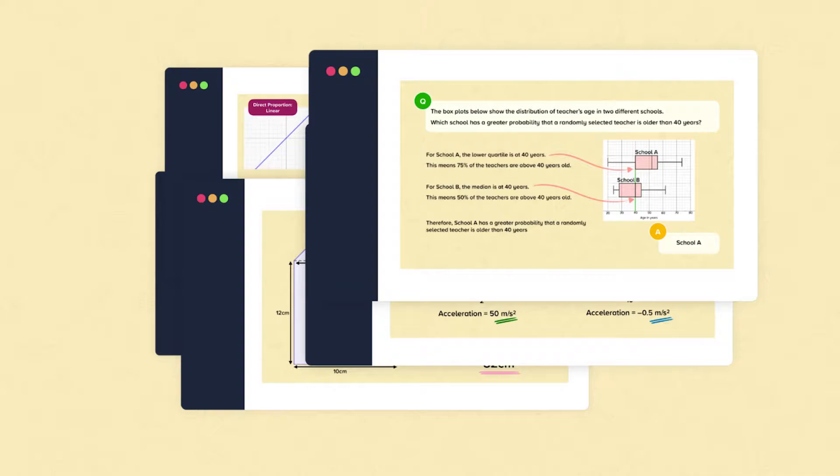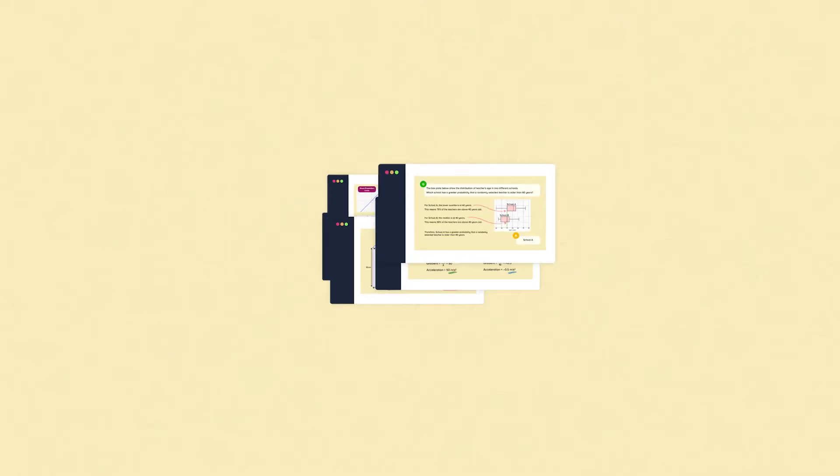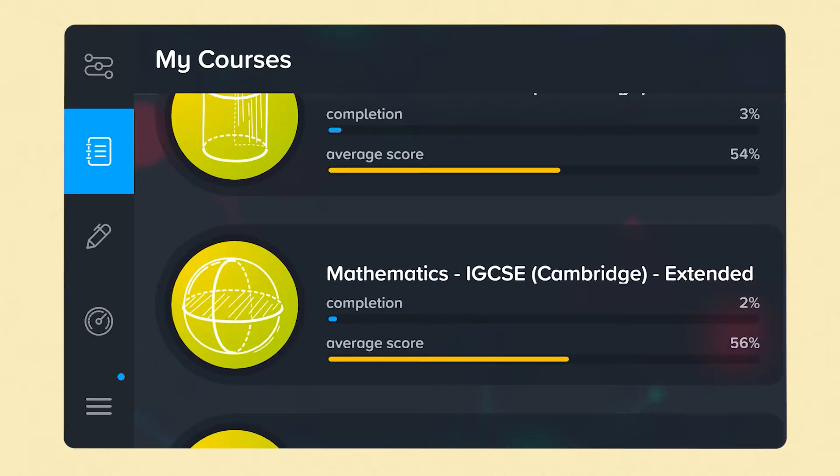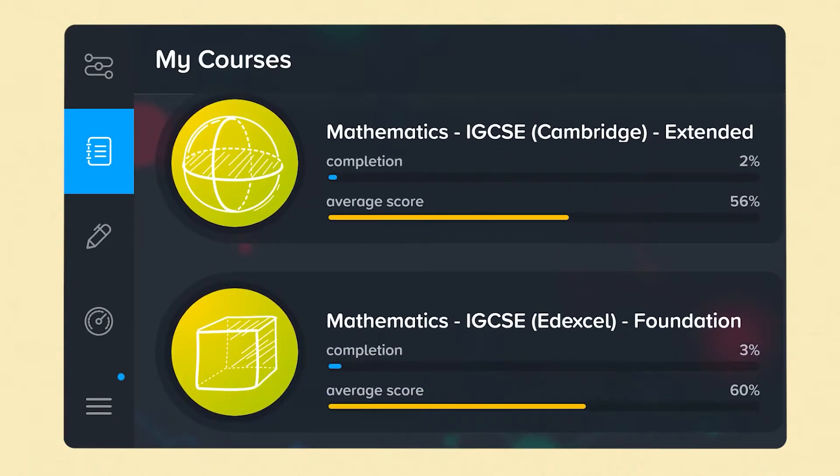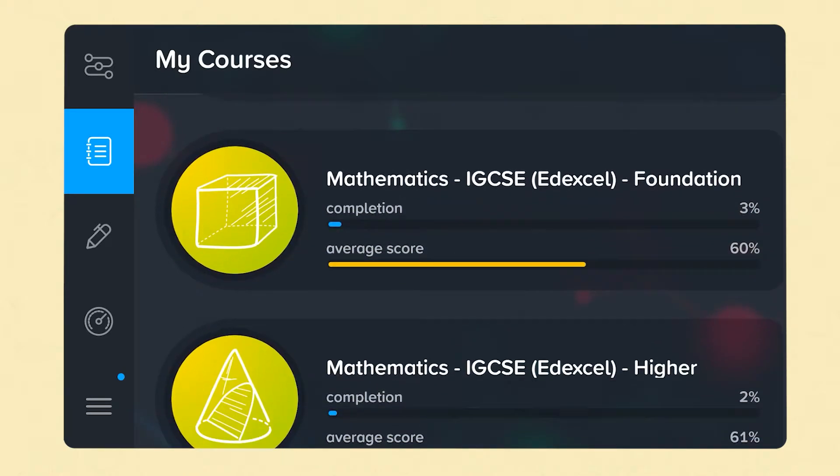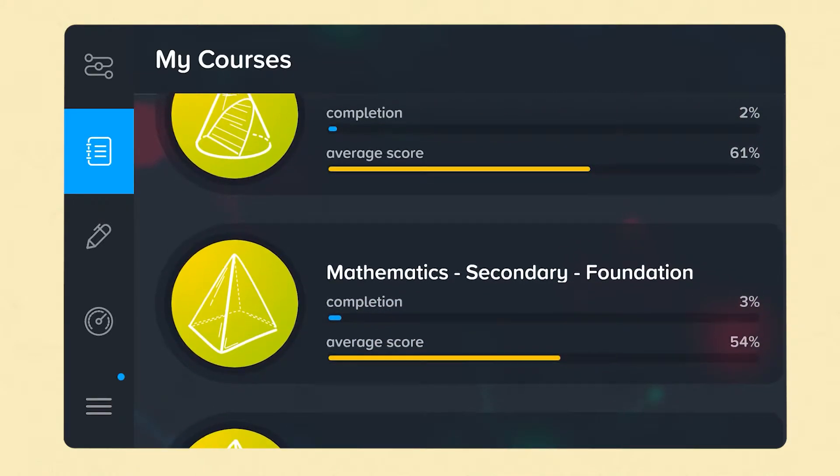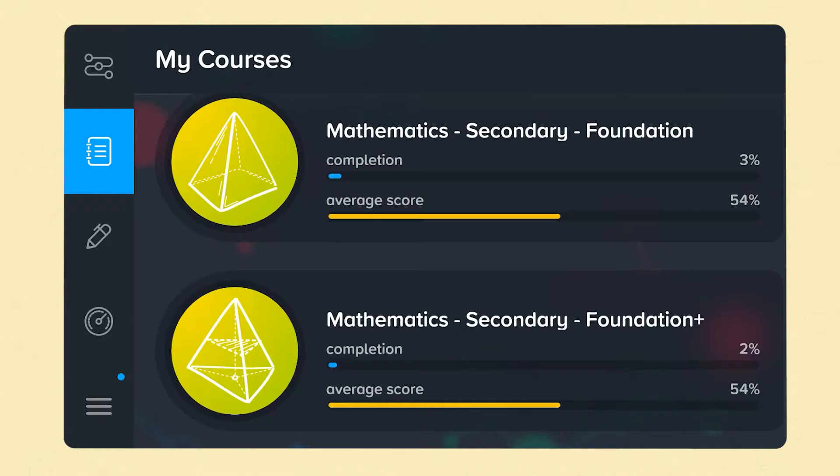All of the content on Century is created by experienced teachers who are subject specialists. At Century, our secondary maths courses are designed for all learners in years 7 to 11. Our courses extensively cover all of the topics studied at Key Stage 3 and GCSE whilst providing supporting material from the primary curriculum.